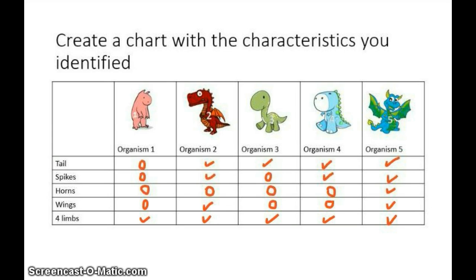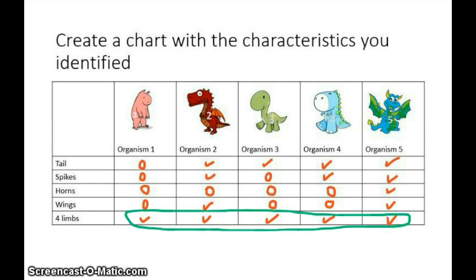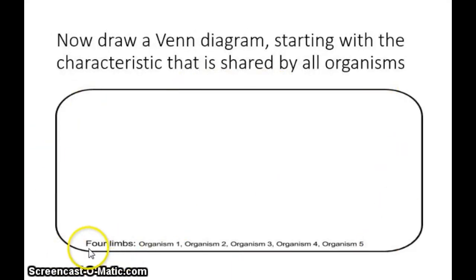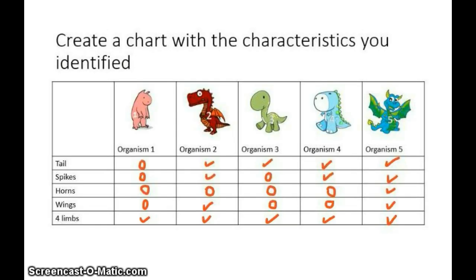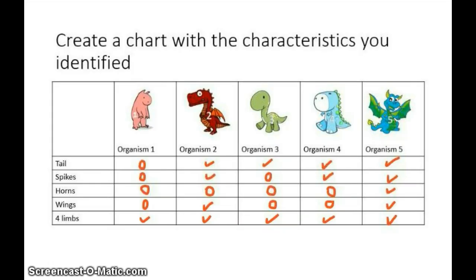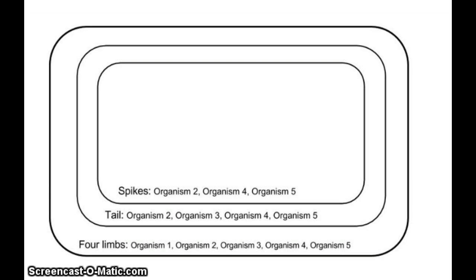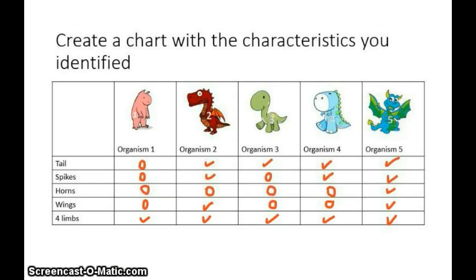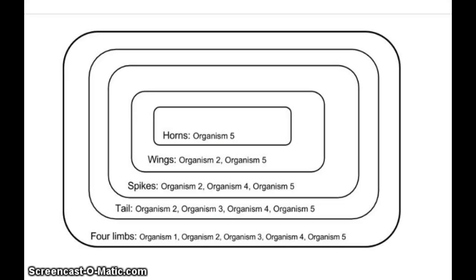This is all fine and good, but now how do I change this into a cladogram? You need to draw a Venn diagram starting with a characteristic that is shared by all organisms. In this case, four limbs. So I draw the big circle, add the characteristic and the organisms. We continue with a shared characteristic of tail. The next one I see shared by many is spikes, which was shared by organisms two, four, and five. Add them to your Venn diagram. So now we have a complete Venn diagram of shared characteristics.